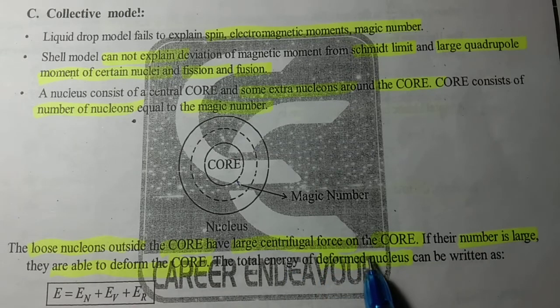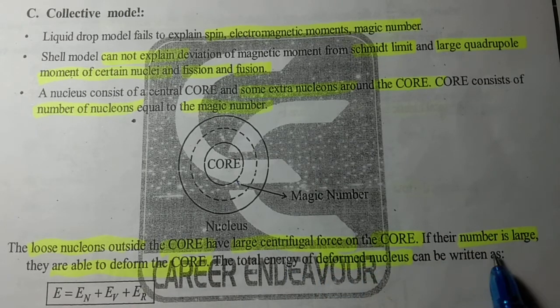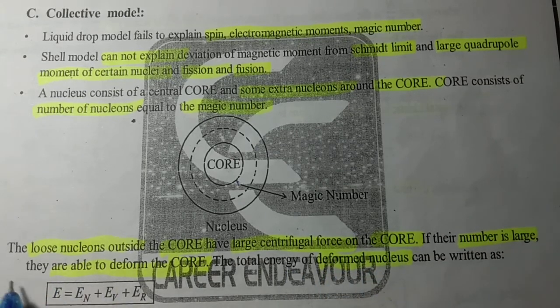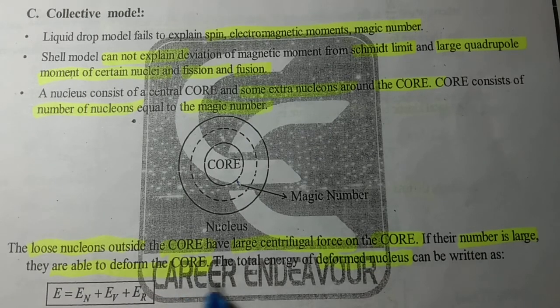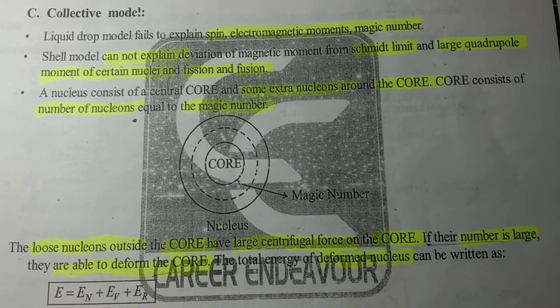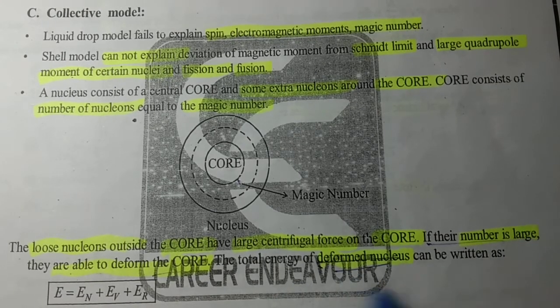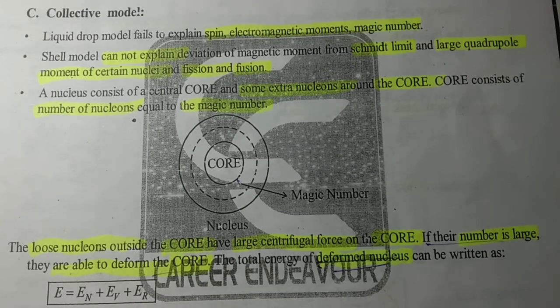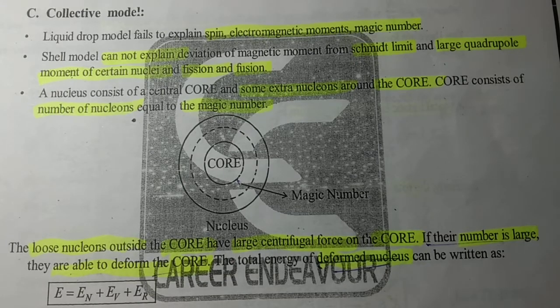The loose nucleons outside the core have large centrifugal force on the core. If their number is large, they are able to deform the core, and the total energy of deformed nucleus can be written as E = En + Ev + Er.